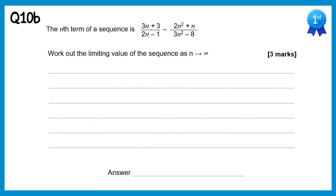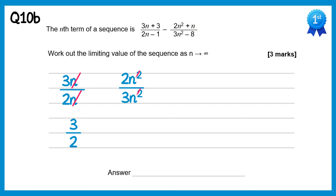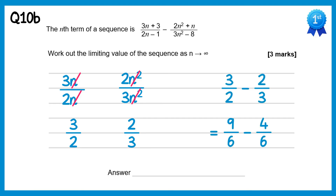Now we need to find the limiting value as n tends towards infinity, looking at each fraction separately. For the first fraction, ignoring the 3 and negative 1, we get 3n over 2n, and cancelling the n's gives 3 over 2. For the second fraction, ignoring the n and negative 8, we get 2n squared over 3n squared, and cancelling gives 2 over 3. Since the two fractions are subtracted in the nth term, the overall limit is 3 over 2 minus 2 over 3, which equals 9 over 6 minus 4 over 6, giving 5 over 6.